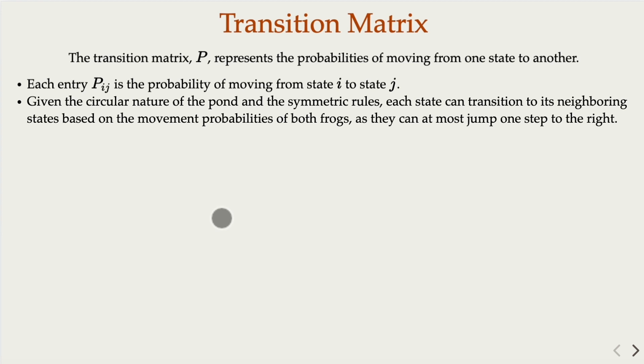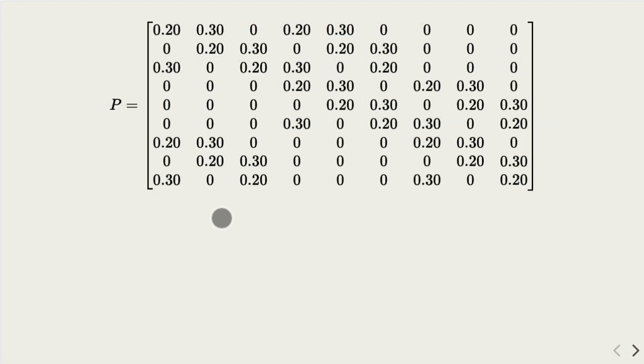So for example, in case of n equals 3, that is the total n squared, which is 9 different positions, and you're going to have a 9 by 9 matrix, we actually have these transitional probabilities.